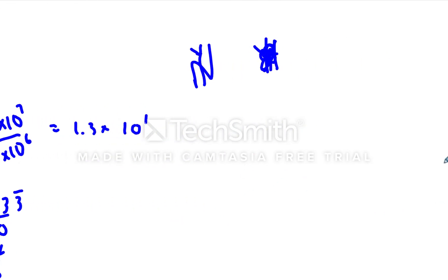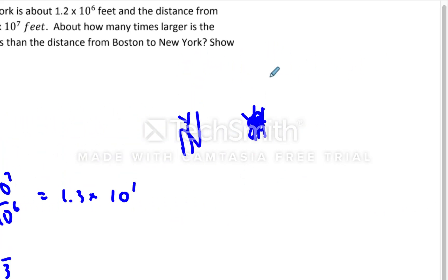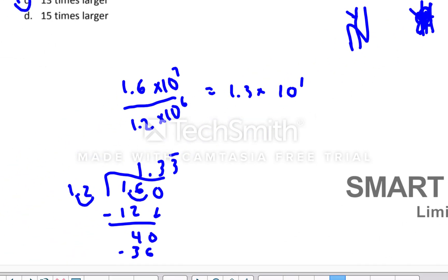because 1.3 times 10 would equal 13. And remember, it's not going to be exact, but I think they used the word about in here. They did. It's right there. So 13 times.